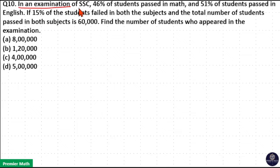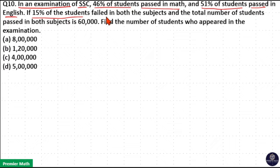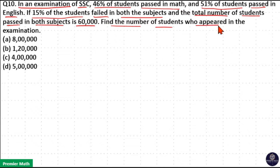In an examination of SSE, 46% of students passed in maths, 51% of students passed in English, 15% of the students failed in both subjects, and the total number of students who passed in both subjects is 60,000. Find the number of students who appeared in the examination.